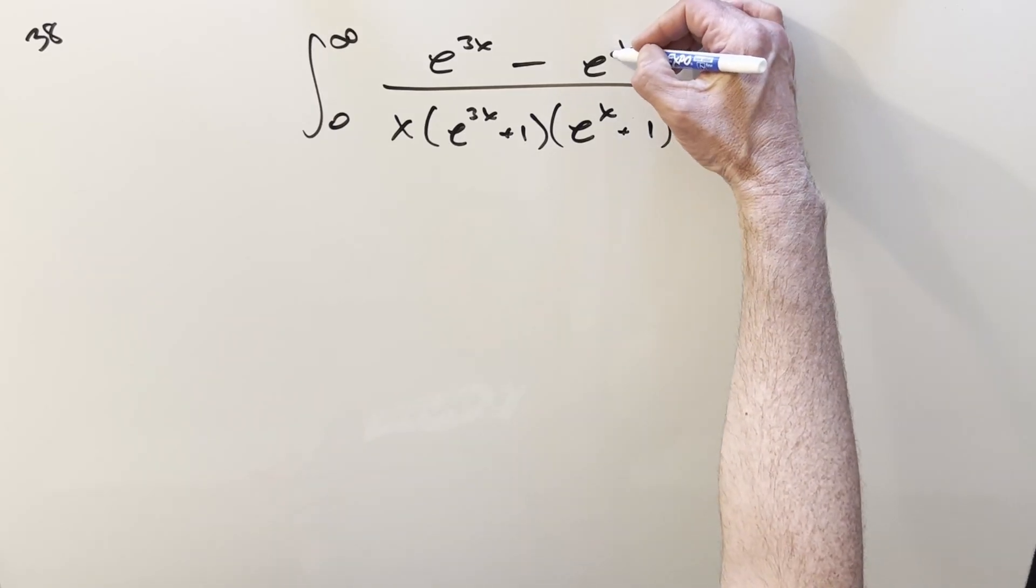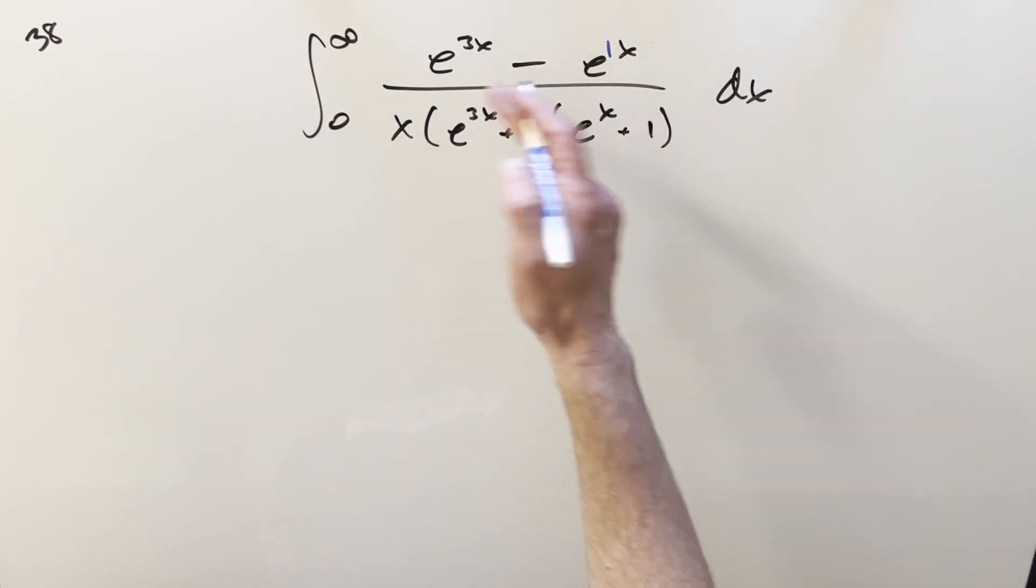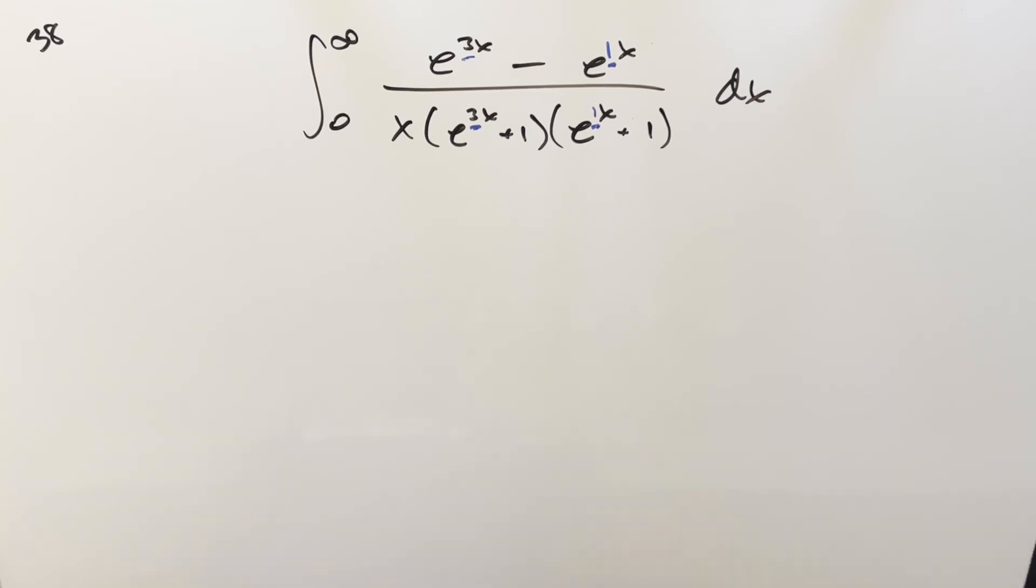The video I did before was the general case where we had like b and a for the constants. If you watch the video for the 2006 integration bee, most of the problems are a lot easier than this. The integration bees were kind of a new idea then, and the contestants weren't ready for something like this. It just kind of doesn't fit with the other problems.